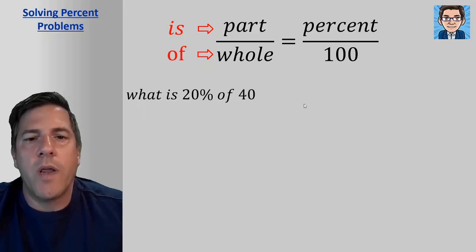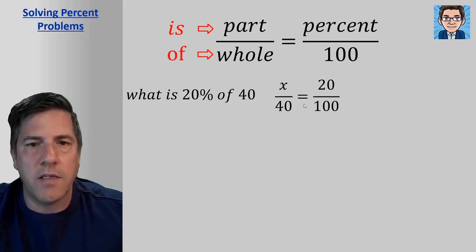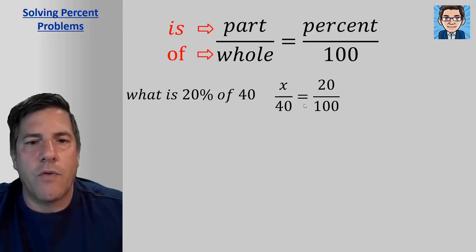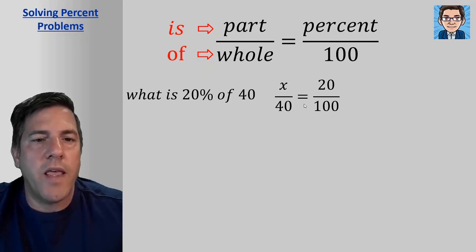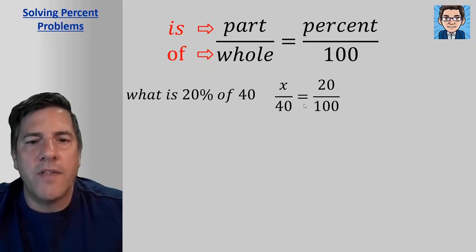So what is 20% of 40? So the way we would set up this is x over 40 equals 20 over 100. We don't know what the part is. So the part is x. The whole is 40. The percent is 20. And it's always over 100 for a percentage. So the is over the of, it says what is. So we don't know the is part. And the of, it says of 40. So that just gives you a little trick as far as what goes in the part and what goes in the whole. So whichever one helps you to get this right is fine.